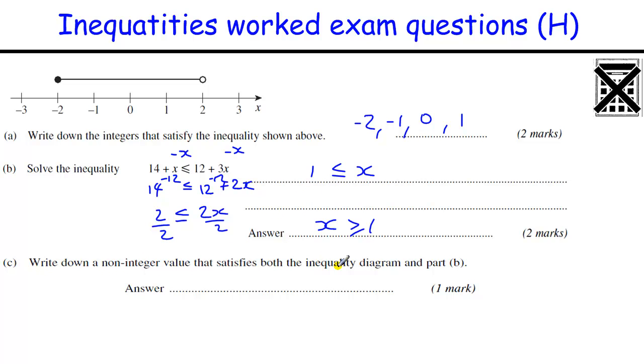Write down a non-integer value that satisfies both the inequality diagram and part b, so we need something that's greater than or equal to 1, and is in this list of numbers, well the only number there is the number 1.